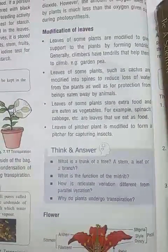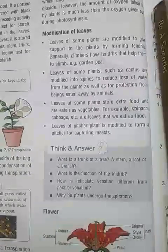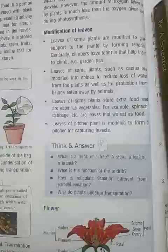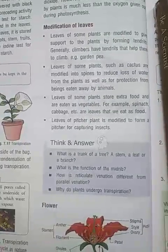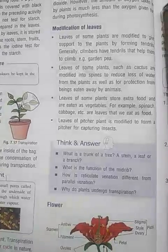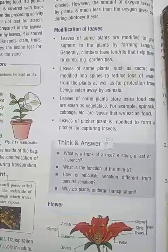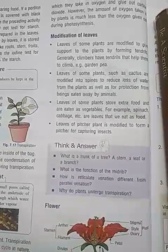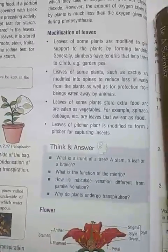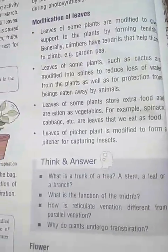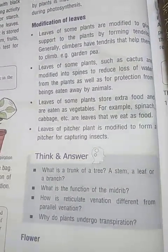Leaves of some plants are modified to give support to the plant, forming tendrils that help the plant climb. Leaves of some plants such as cactus are modified into spines to reduce water loss and protect from being eaten by animals. Leaves of some plants store food and are eaten as vegetables, for example spinach and cabbage. Leaves of the pitcher plant are modified to form a pitcher to capture insects.